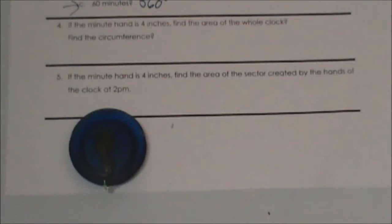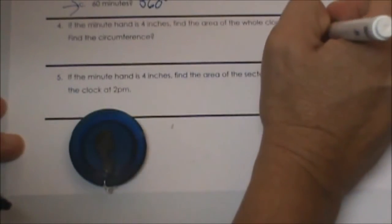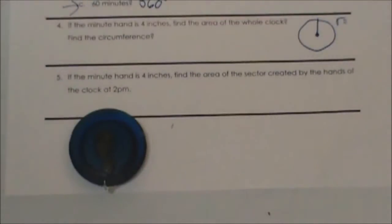The minute hand is the longer hand, so what are they trying to describe to us? The minute hand would represent the radius. So we are saying the radius is 4 inches.